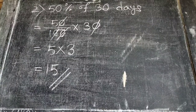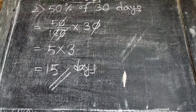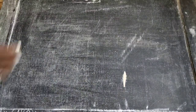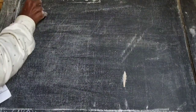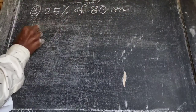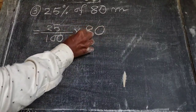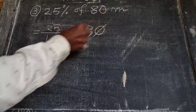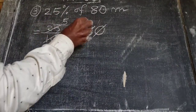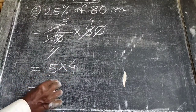Next, (3) 25 percent of 80 meters: 25 by 100 into 80. After cancelling zeros by 5, we get 25 by 5 equals 5, and 80 by 2 equals 4. So 5 into 4 equals 20 meters.